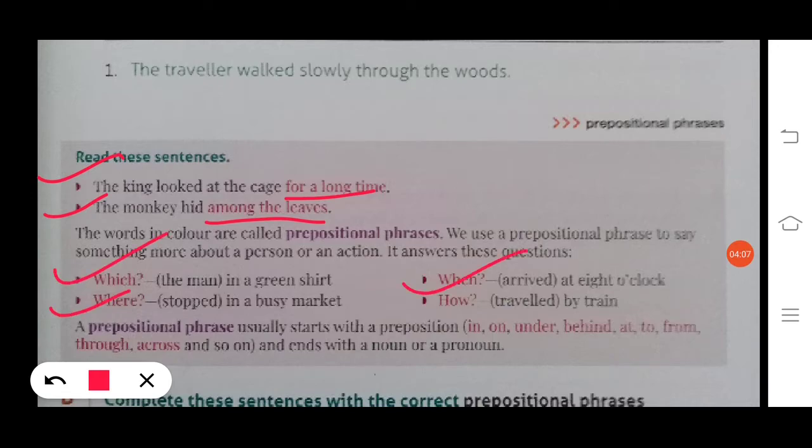Which? The man in a green shirt. Where? Stopped in a busy market. When? Arrived at eight o'clock. How? Traveled by train.